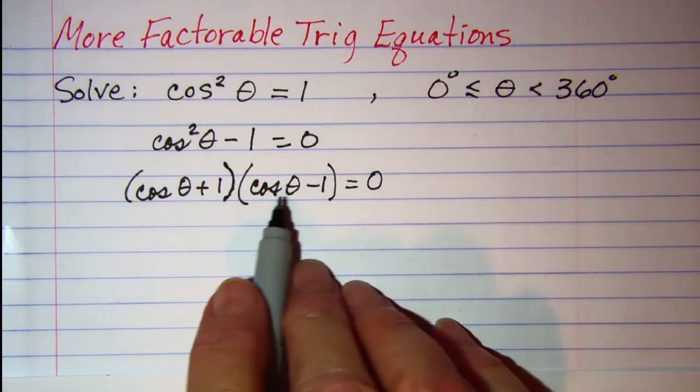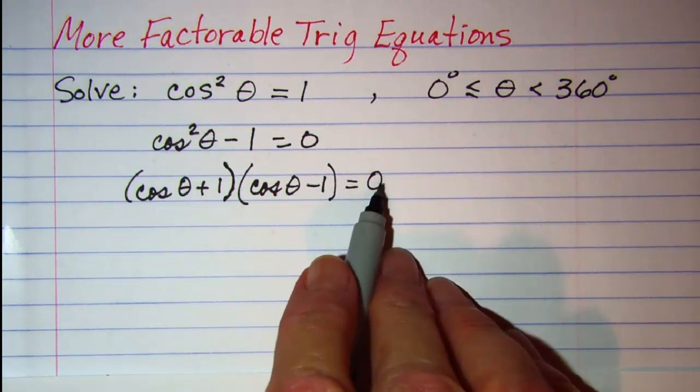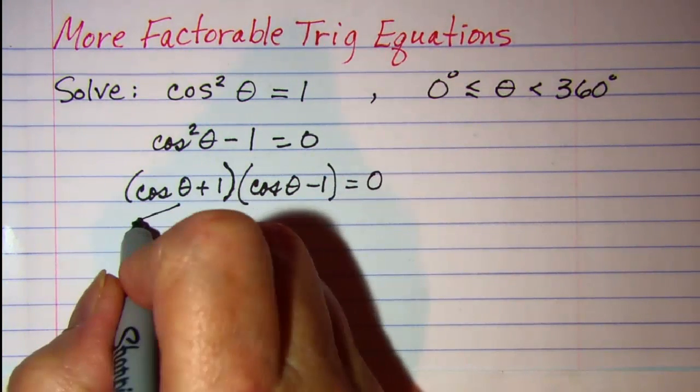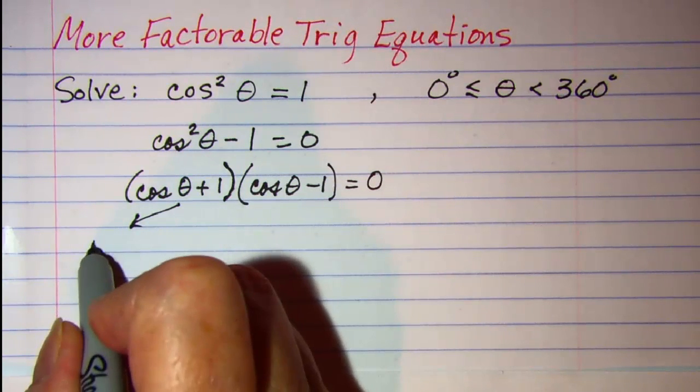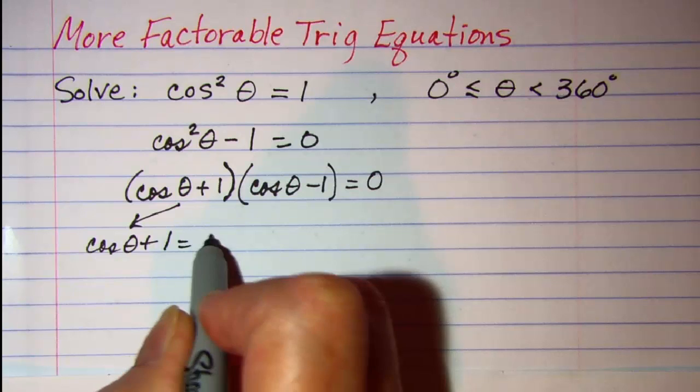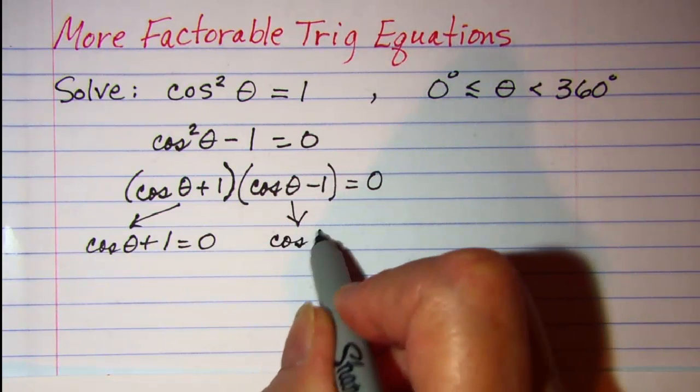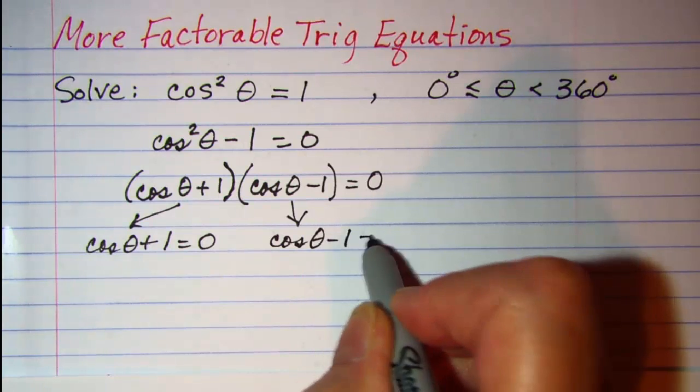Once you have factors multiplied together and the product is 0 you can set the factors equal to 0. So we have cosine theta plus 1 equals 0 and we have cosine theta minus 1 equals 0.